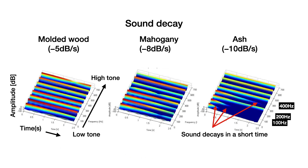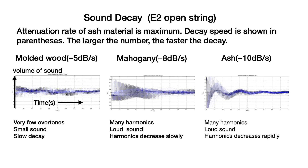In this figure, the horizontal axis is time, the vertical axis is sound volume, and the data from low to high sounds is shown from front to back. The numbers in parentheses indicate the attenuation speed of the sound; the larger the number, the faster the attenuation. The ash guitar has the highest rate of sound decay at minus 10 dB per second. Mahogany is minus 8 dB per second, and molded material is minus 5 dB per second, making it the least attenuating. Molded wood has much less harmonic content, is quieter, and has a slower decay. Mahogany has more overtones, a louder sound, and a gentle attenuation of overtones. Ash has many overtone components and sounds loud at the moment the string is plucked, but the overtone components tend to decrease rapidly.